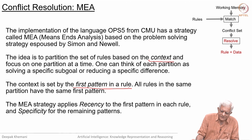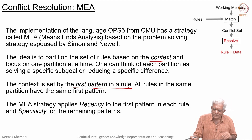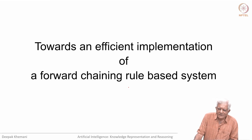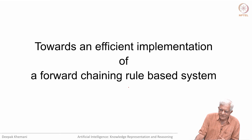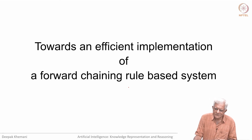What the MEA strategy does is apply recency to the first pattern, so if you are doing some activity you continue doing it unless you explicitly switch context — some rule must signal the end of activity x before moving to activity y. Within a context, you can apply specificity to the remaining patterns, choosing the most specific rule. You can think of combinations of these strategies. Next, we will look at the Rete algorithm, which uses a structure called the Rete net for efficiently implementing rule-based systems. It is quite a well-known and neat algorithm, and we will cover it in the next video. Thank you.